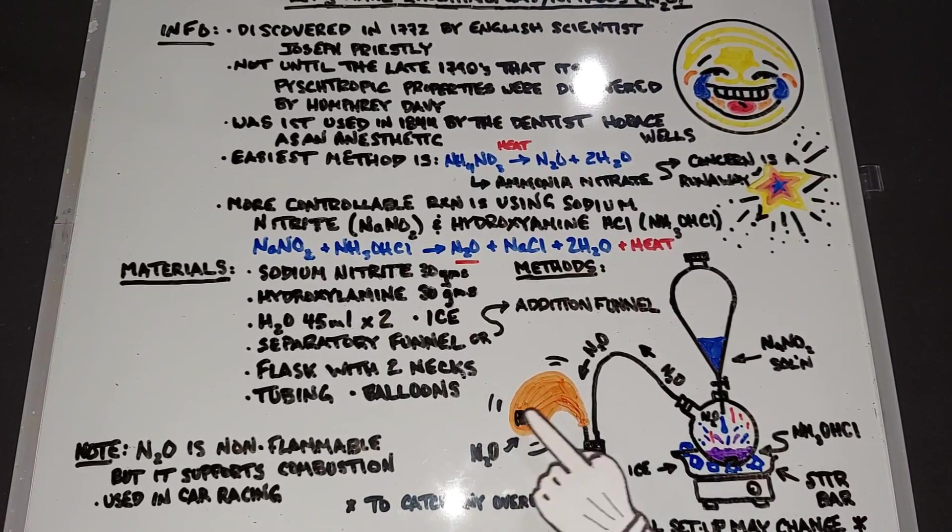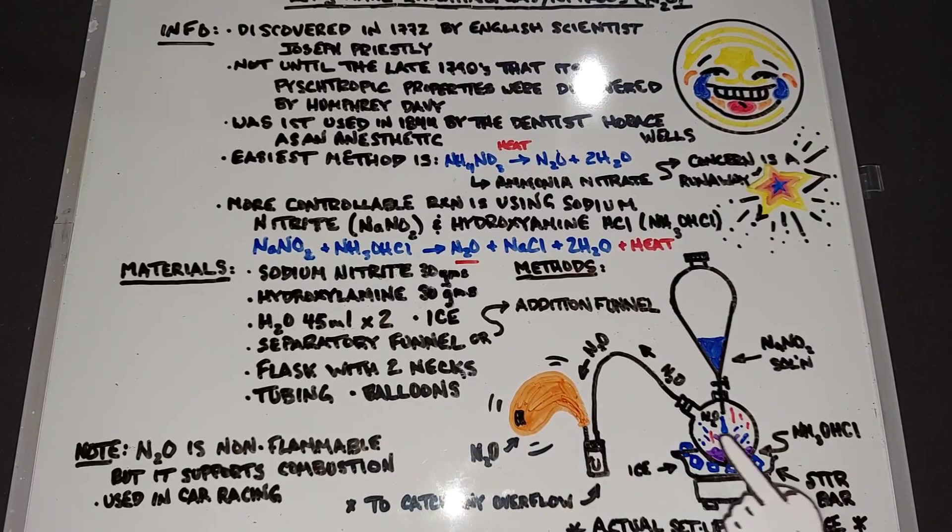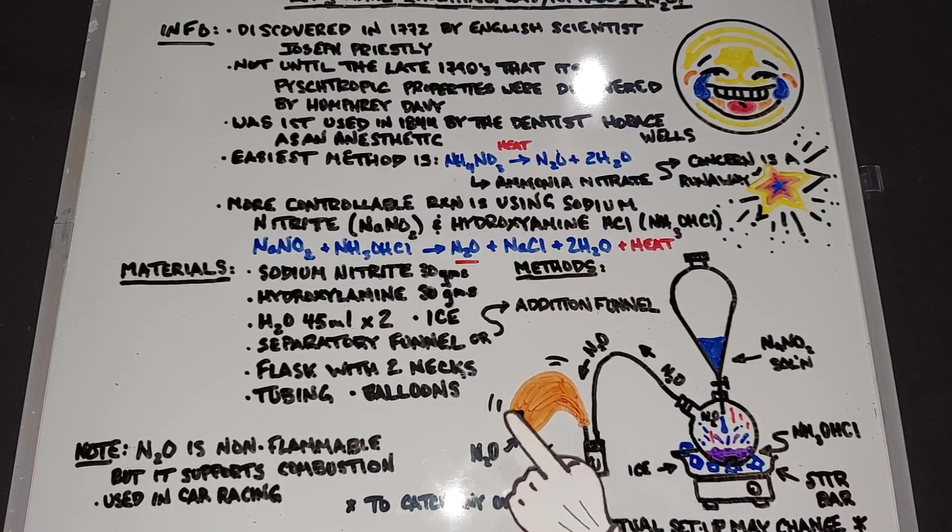A tube will be coming out here and filling up a balloon with our nitrous. I did put a catch here, so to speak, that will collect any fluid that might make it up and down, so it'll be collected in this bottle and not get pumped directly into the balloon. But we'll see how that goes, it is to catch any overflow like I said.